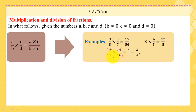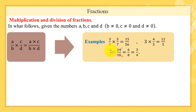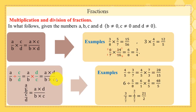Finally, 6/7 × 14/16. Keep in mind that in multiplication we can simplify fractions: 6 and 16 are both divisible by 2, giving 3 and 8; 14 and 7 are both divisible by 7, giving 2 and 1. So 2×3 = 6 and 1×8 = 8, giving 6/8 = 3/4.